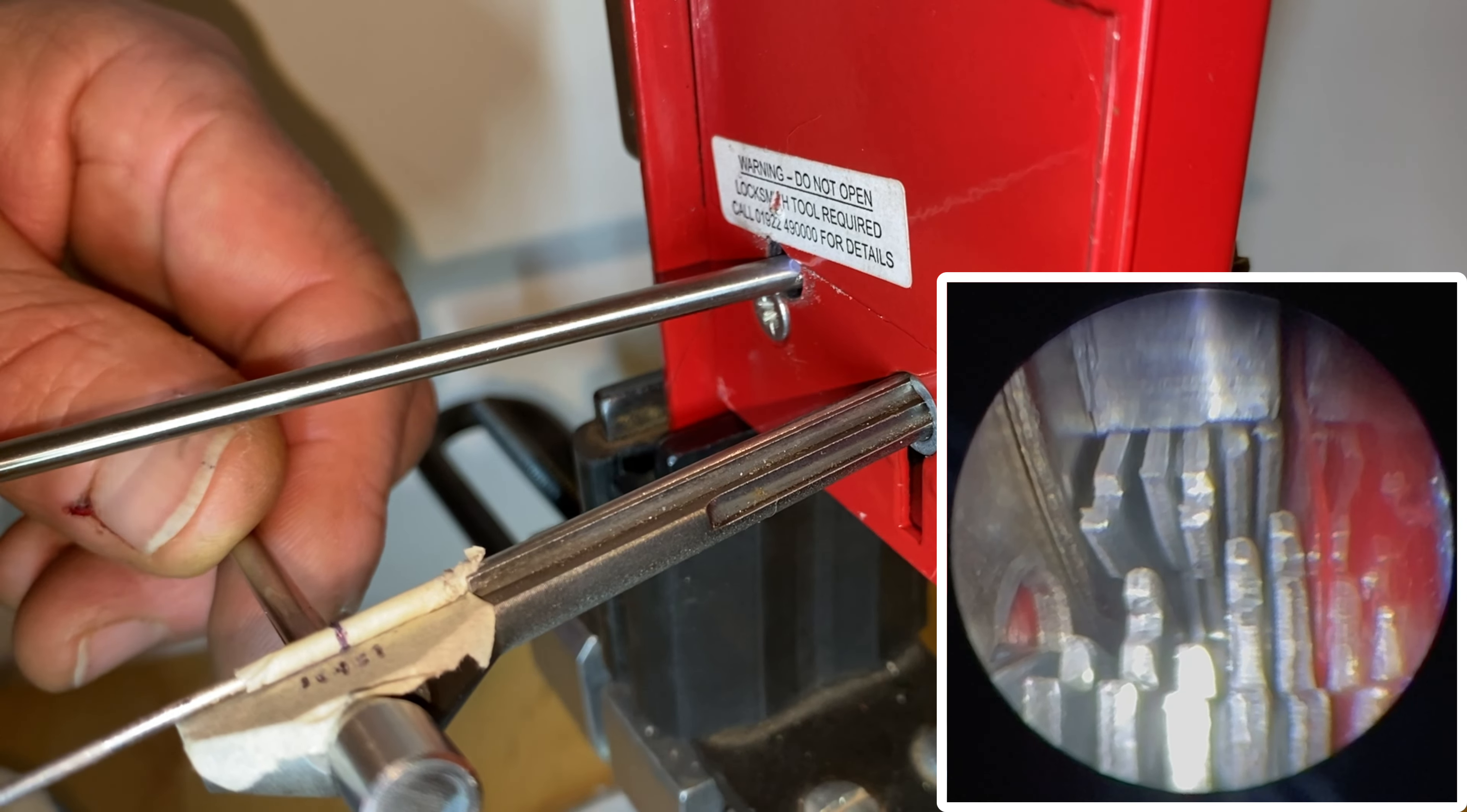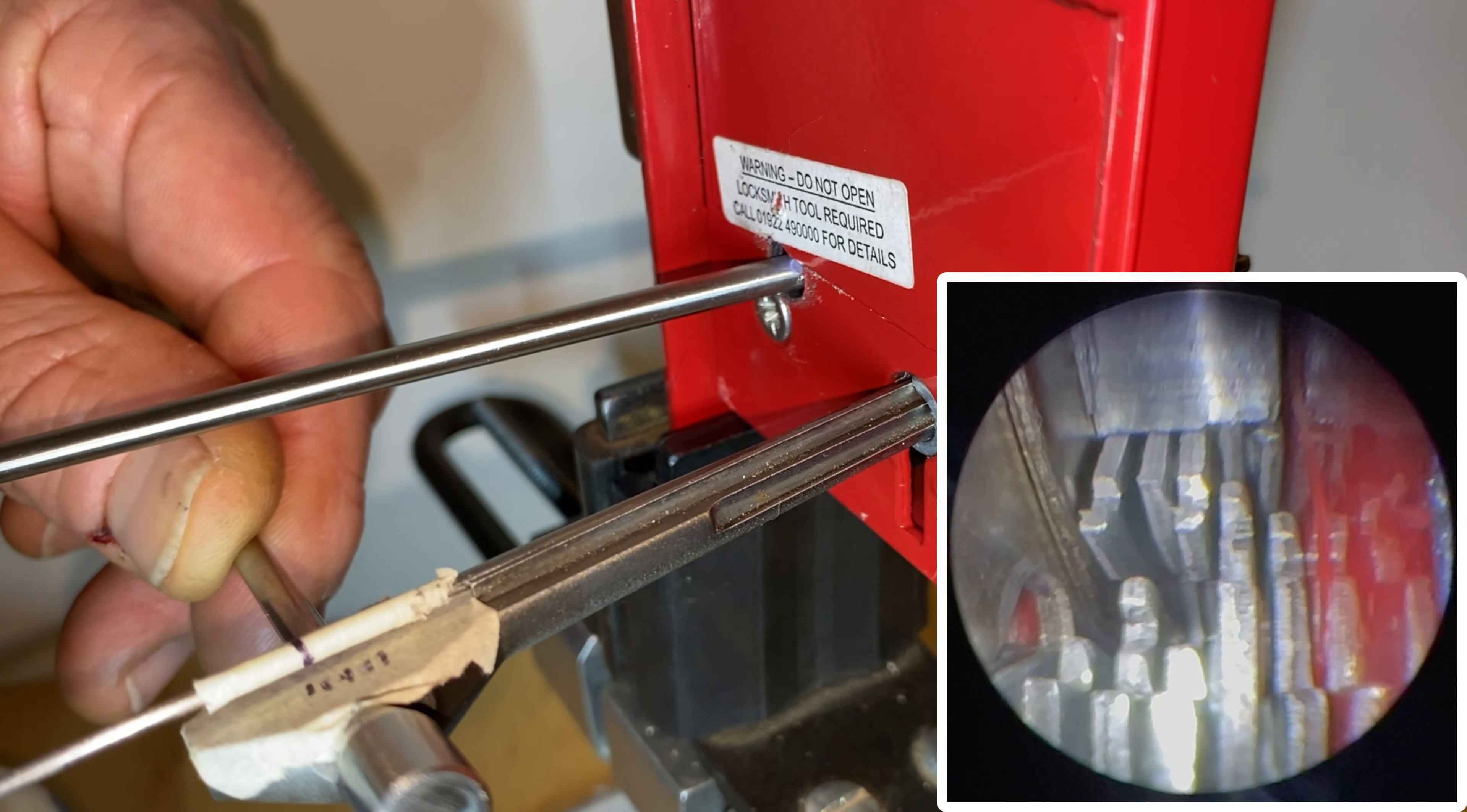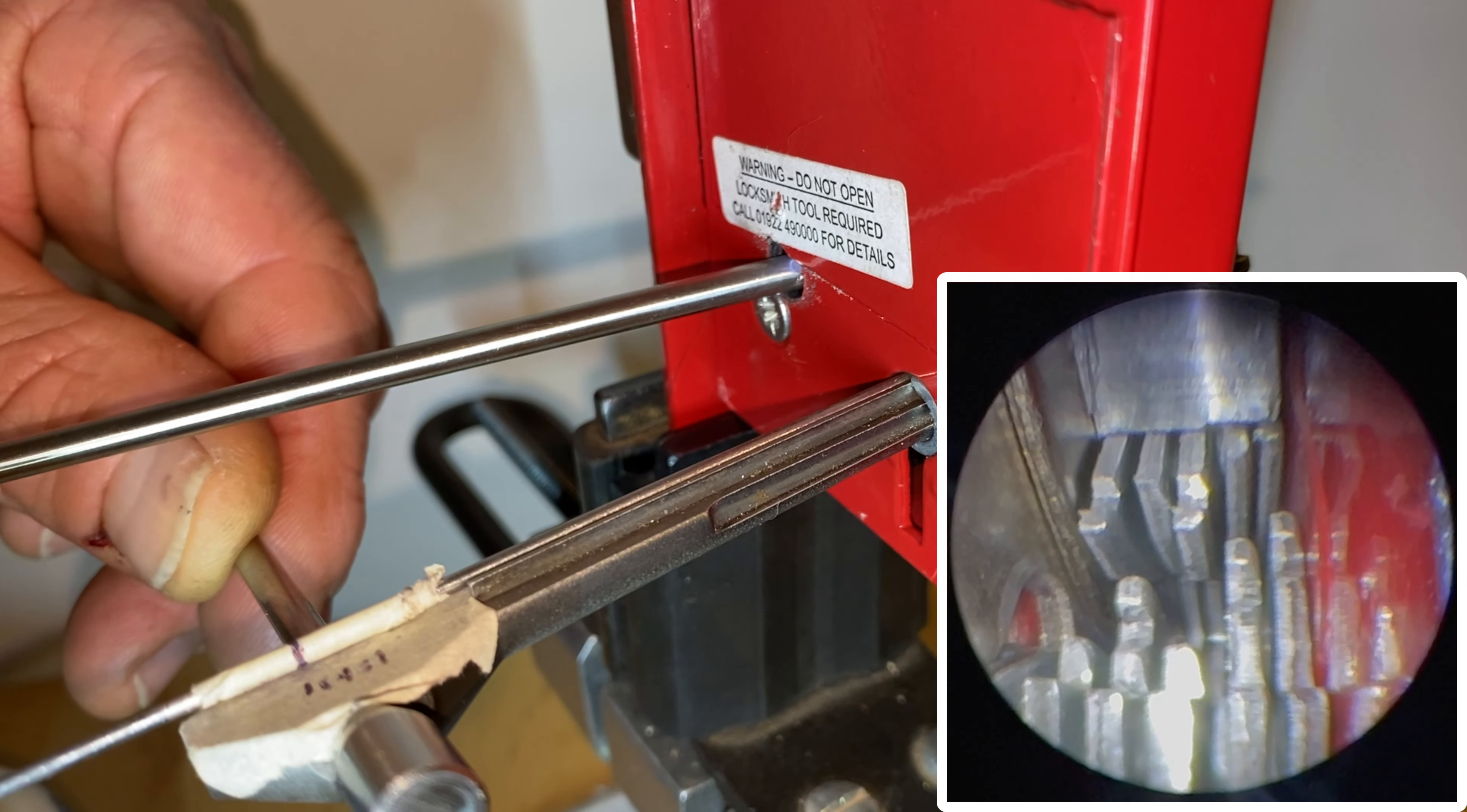So if we go to the front of the lock, you can see lever one and lever two are both very loose. If we lift them, they just drop straight back down again.